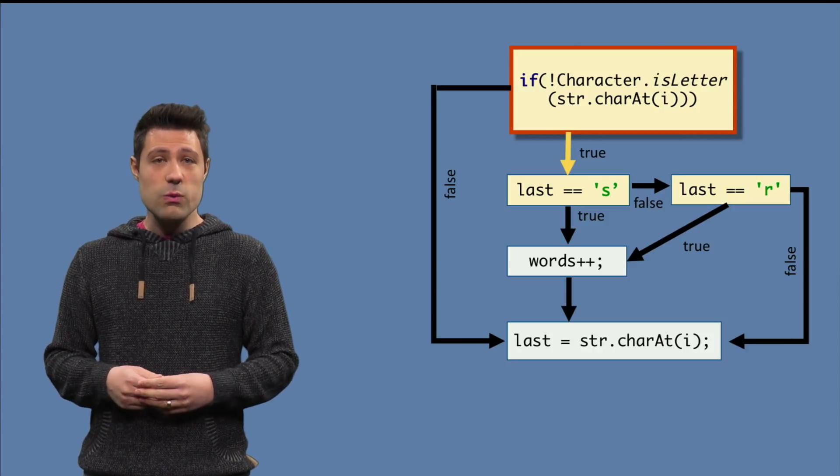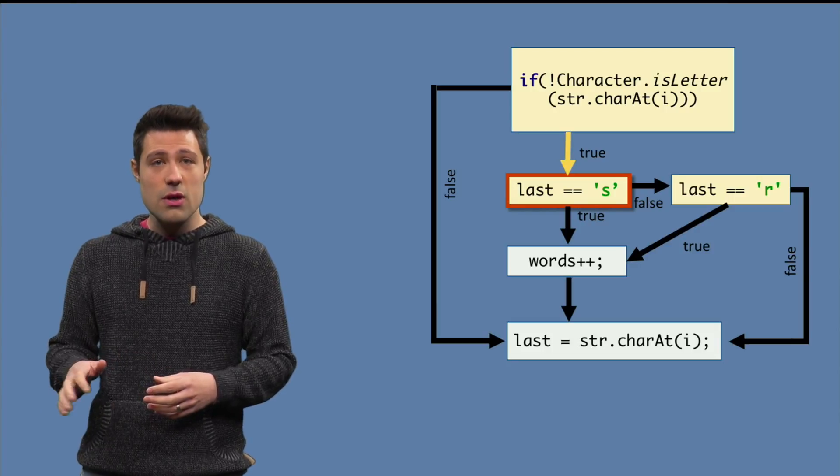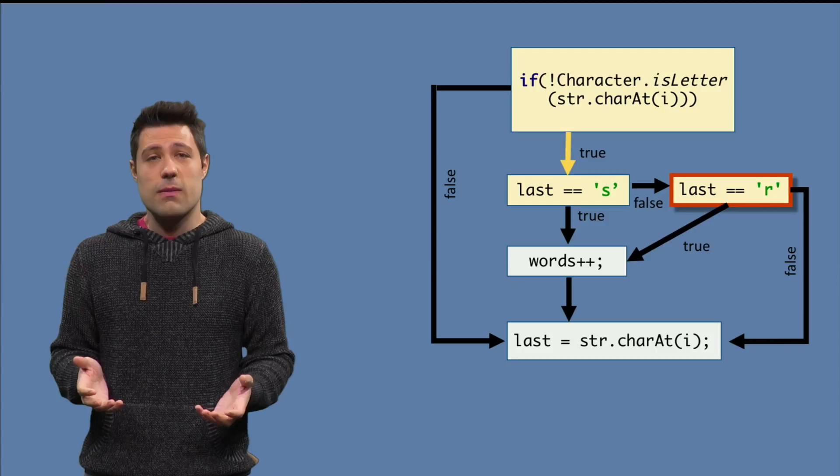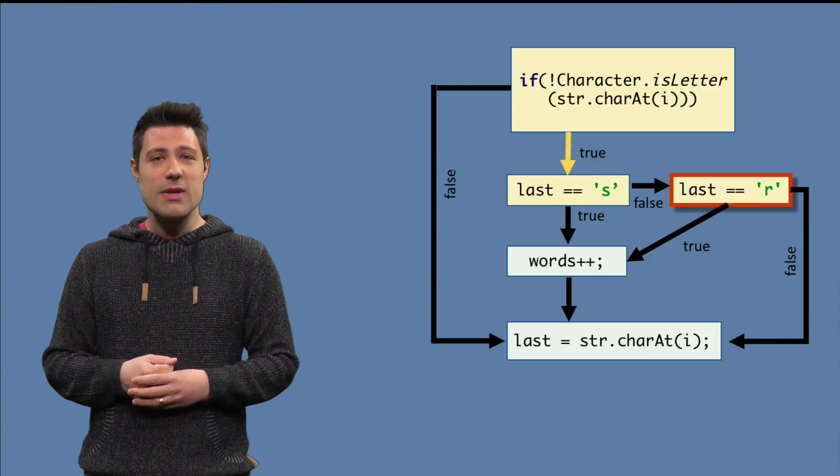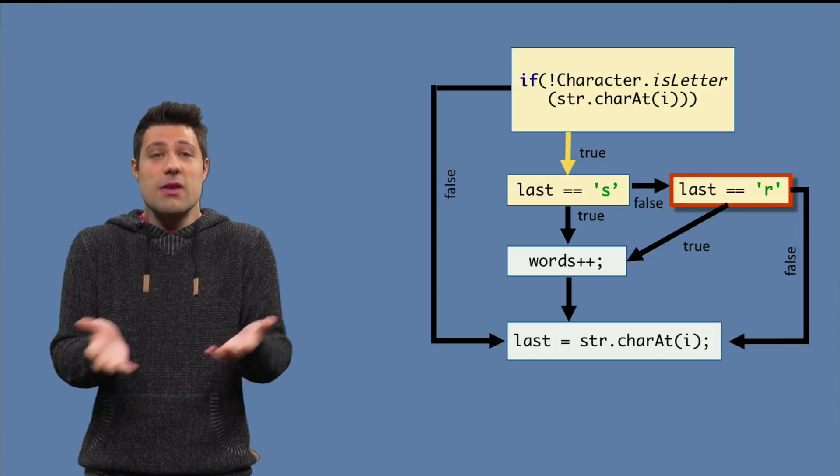Now, there are two ways for the second one to be true. Either the last variable is equal to S, or it is equal to R. And if one of them, any of them, is true, the program does one thing. If both are false, the program does a different thing.